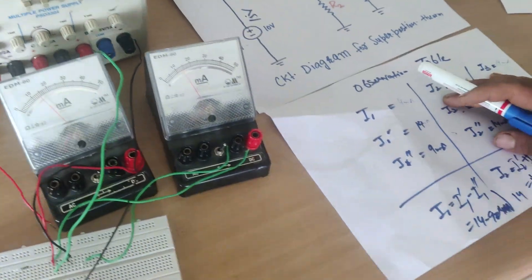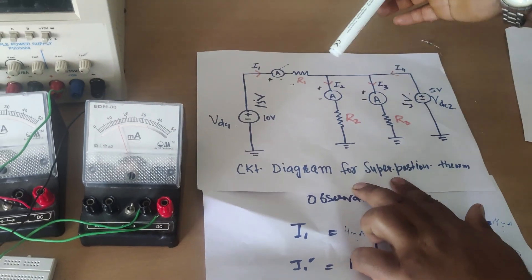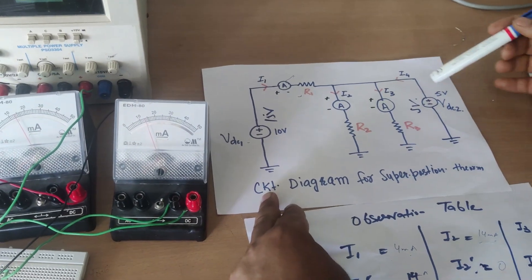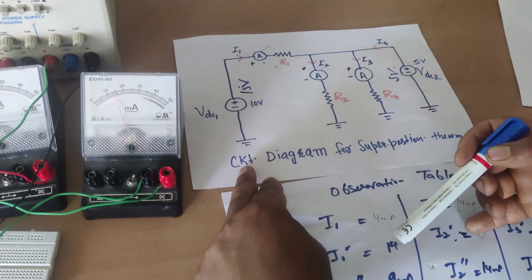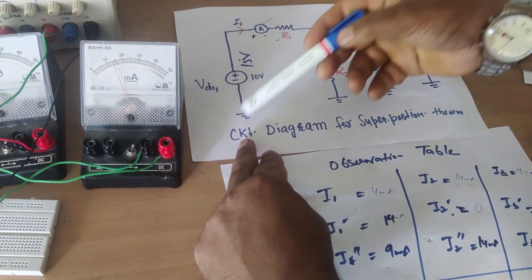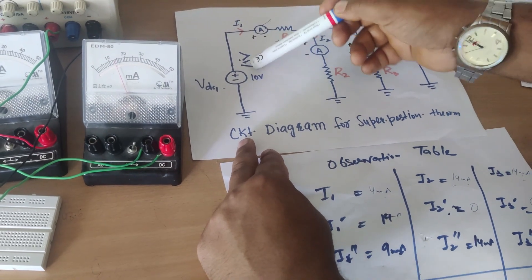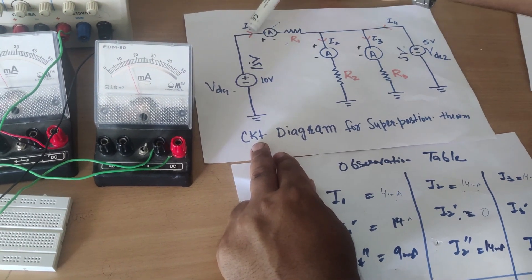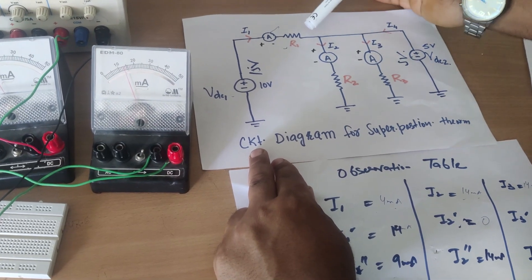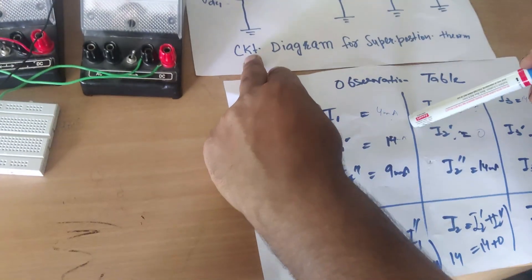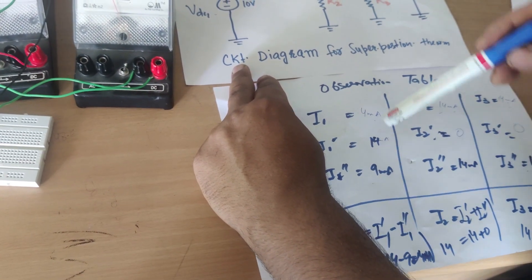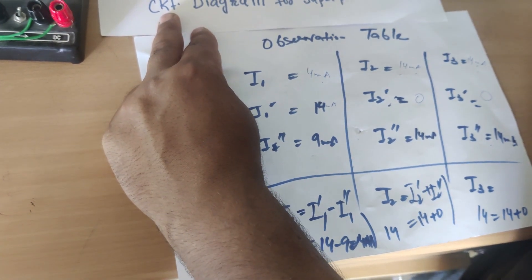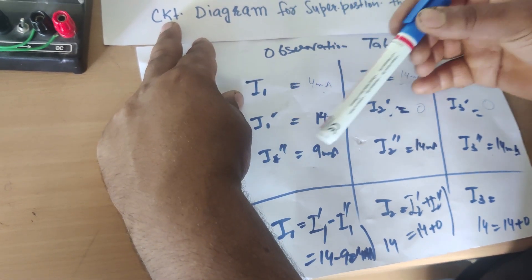Summarizing the results for i1: when both sources were active, i1 was 4 milliamps. When the 5-volt source was replaced by a short circuit, i1-dash was 14 milliamps. When the 15-volt source was replaced by a short circuit, i1-double-dash was 9 milliamps. Since the current directions were reversed in these two cases, the algebraic sum is 14 minus 9 equals approximately 5 milliamps, which matches the original i1 — verifying the Superposition Theorem.